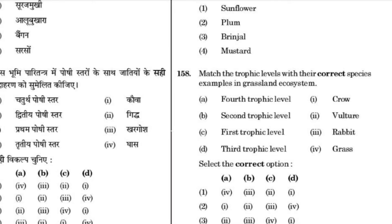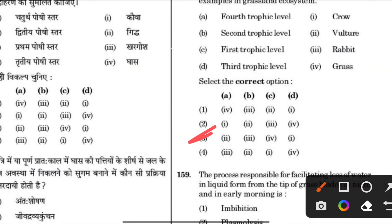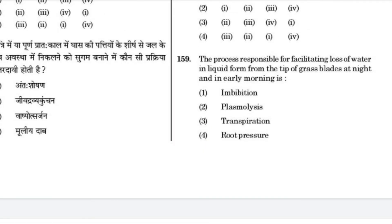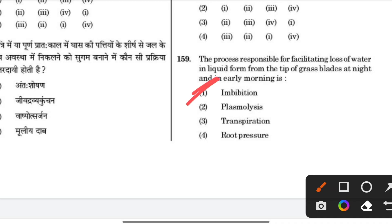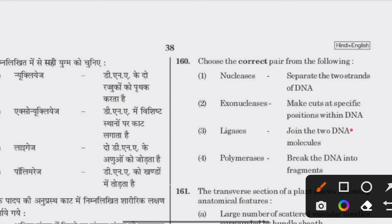Which of the following statements about inclusion bodies is incorrect — the answer is 4. The ovary that is half inferior is an example of a half-inferior flower. Trophic level species example is given. The process responsible for the loss of water in liquid form from the tip of grass blades at night and early morning is called guttation, caused by root pressure.